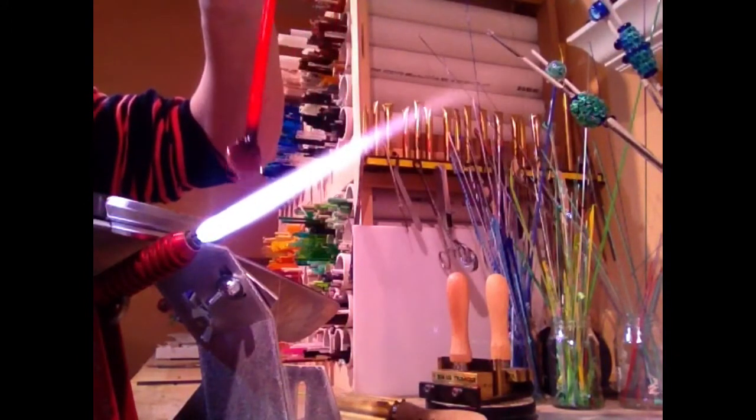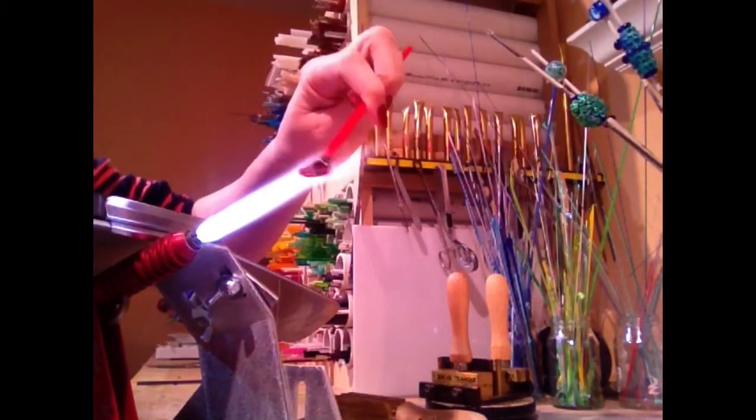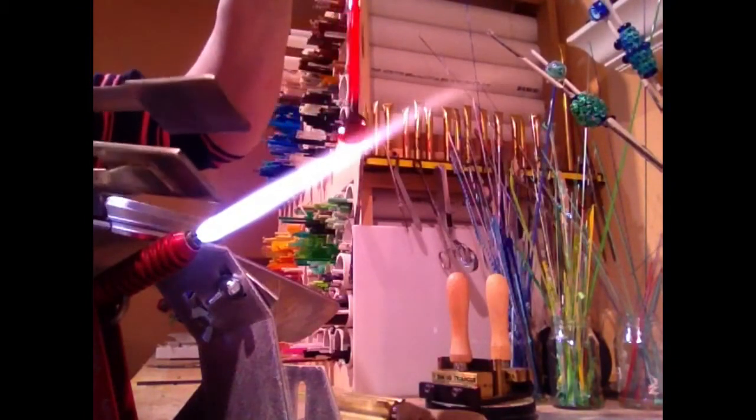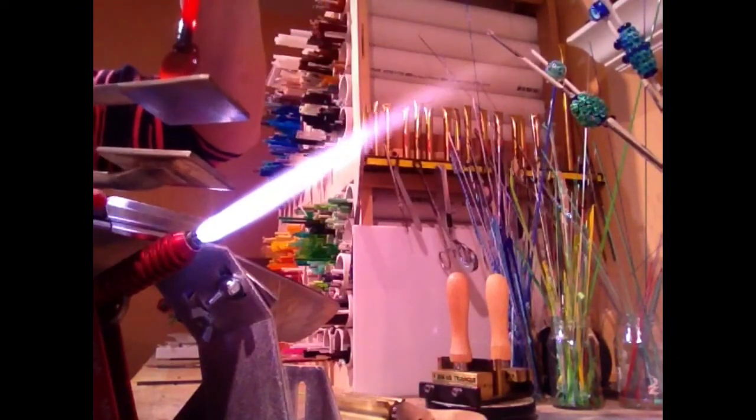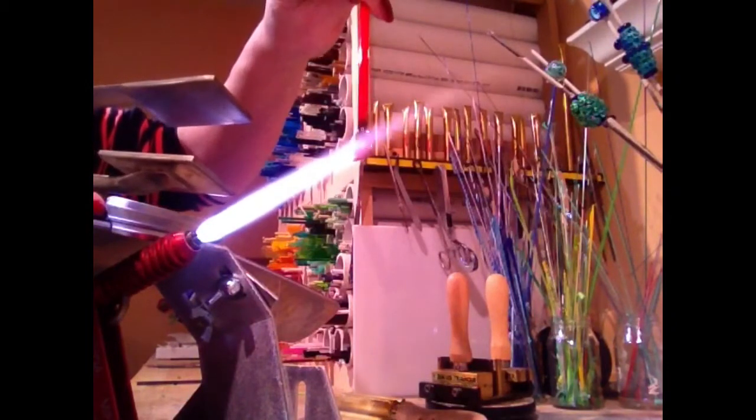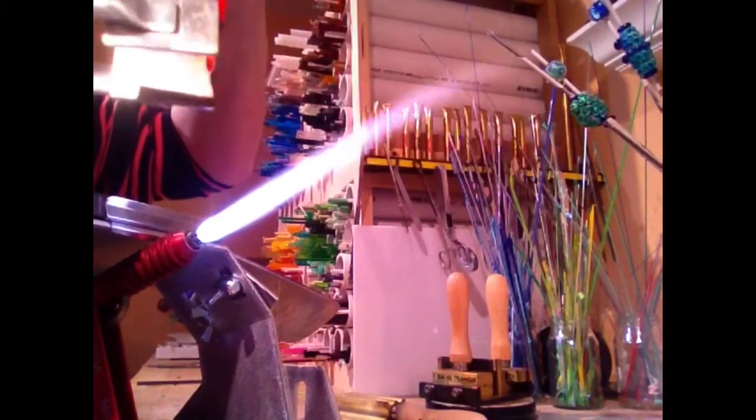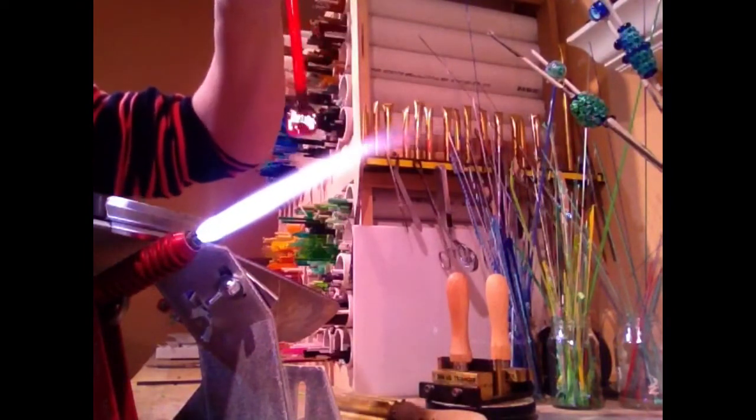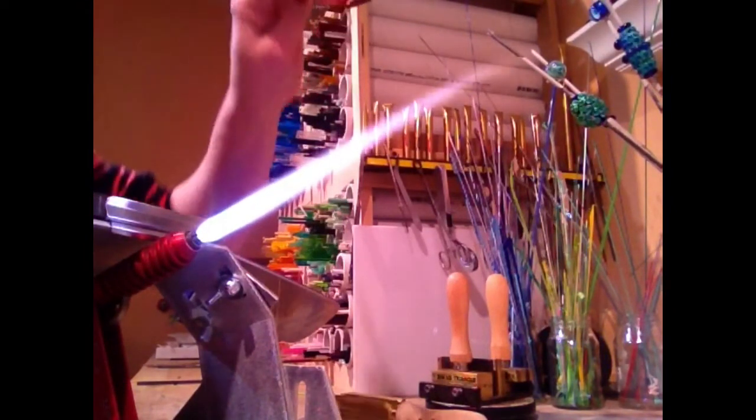Alright, so there's a nice, flat, round paddle, but I kind of want it to be a square. So I'm going to take that, heat it up, and just put it to a square. There. Squared off of this here.